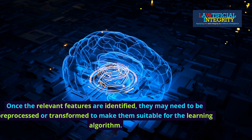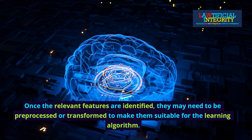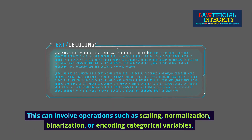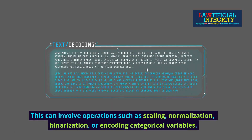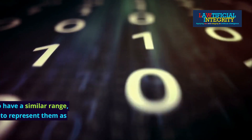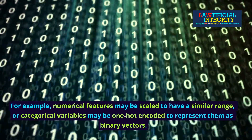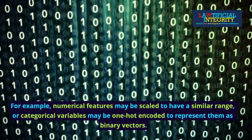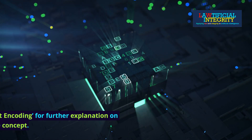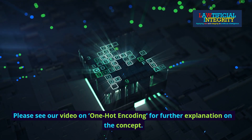Once the relevant features are identified, they may need to be pre-processed or transformed to make them suitable for the learning algorithm. This can involve operations such as scaling, normalization, binarization, or encoding categorical variables. For example, numerical features may be scaled to have a similar range, or categorical variables may be one-hot encoded to represent them as binary vectors.